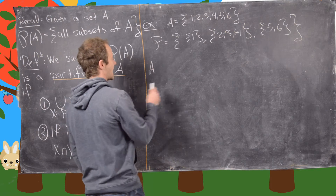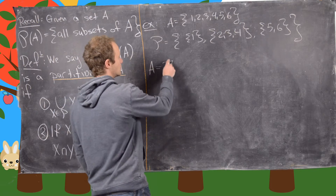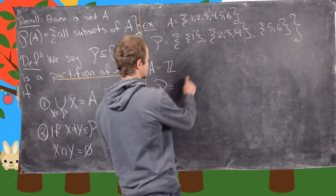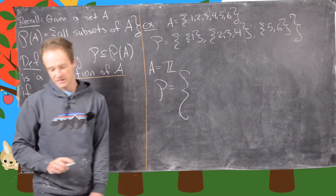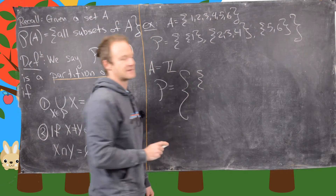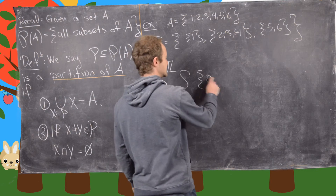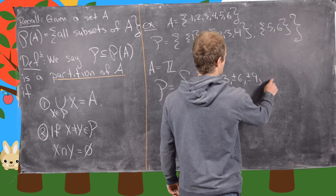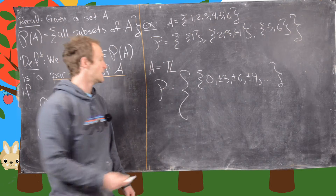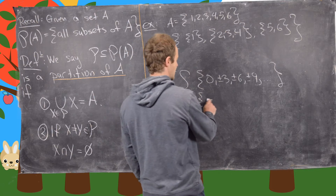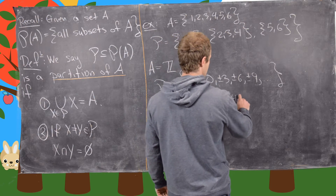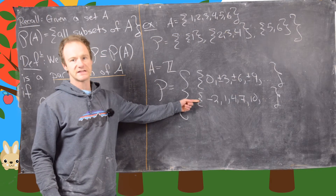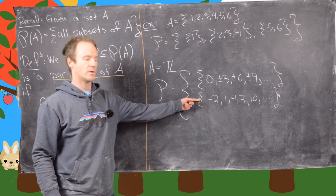The next example: A equals the integers. And we'll take our partition as follows. The first subset is {0, ±3, ±6, ±9, ...}. The second one is {..., -2, 1, 4, 7, 10, ...}. In other words, all of these numbers have a remainder of 1 when divided by 3, while all numbers in the first subset have a remainder of 0 when divided by 3.